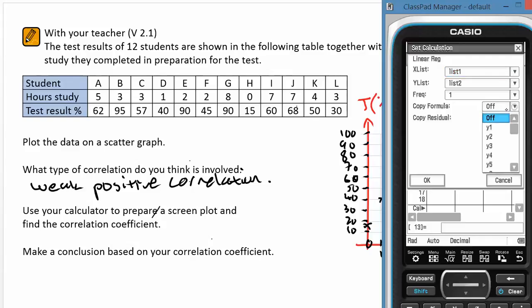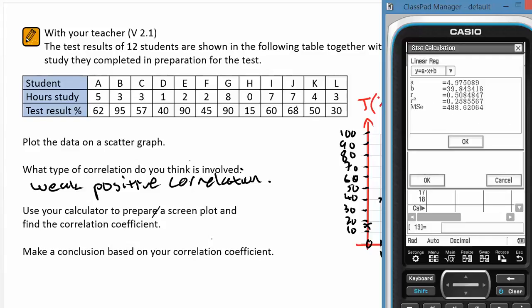I like copying the formula. Later on we'll find out what the residual is about. And then OK, you can see here - if I wanted to record the graph, y equals 4.98x plus 39.84. My R figure: 0.5085.